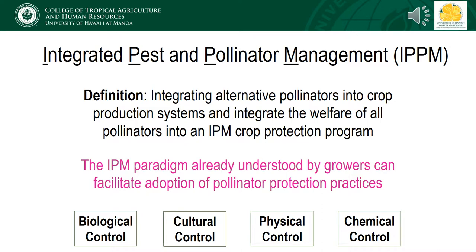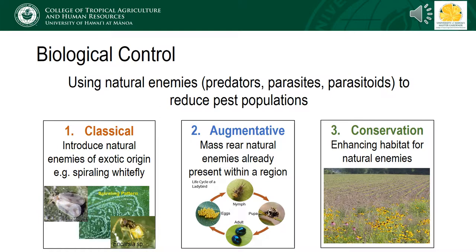But what about bees and other pollinators? How do they fit into this paradigm? The IPM paradigm that is already largely understood by growers and home gardeners can be used to facilitate the adoption of pollinator protection practices through an integrated pest and pollinator management framework, or IPPM. This is defined as the integration of alternative pollinators into crop production systems and integrating the welfare of all pollinators into an IPM protection program. By only slightly tweaking the practices we use for biological, cultural, physical, and chemical control, we can easily adapt best management practices to also benefit pollinators.